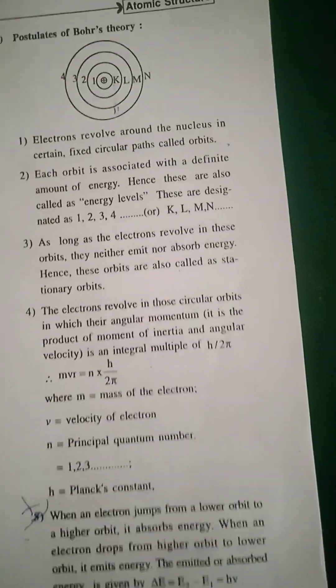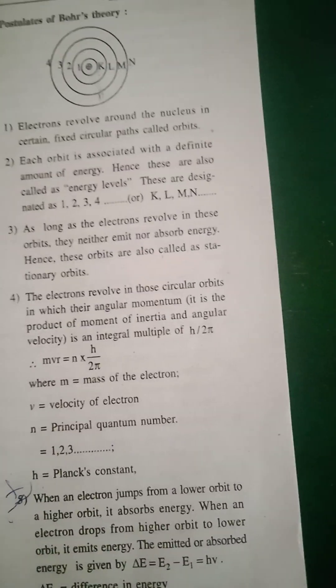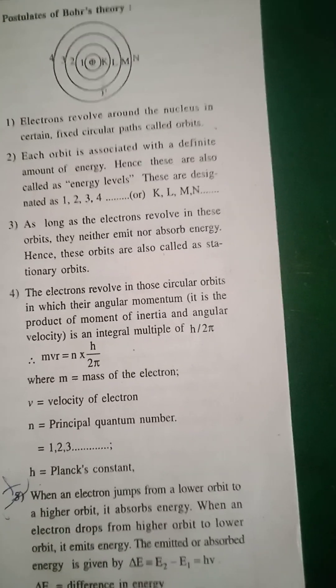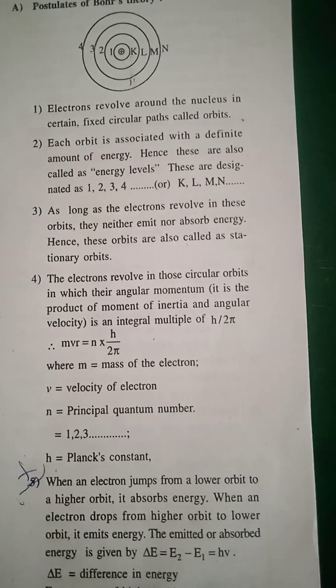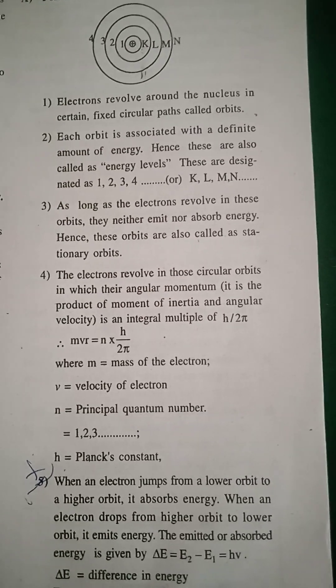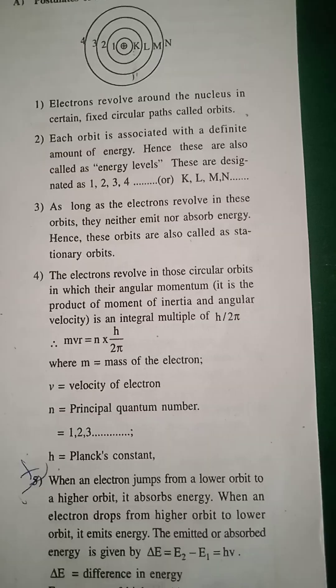Postulates of Bohr's theory. Electrons revolve around the nucleus in certain fixed circular paths called orbits. So electrons revolve around the nucleus in fixed paths or orbits.